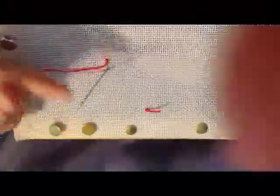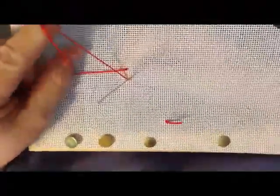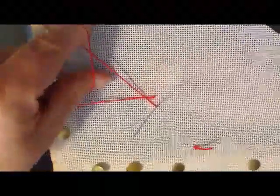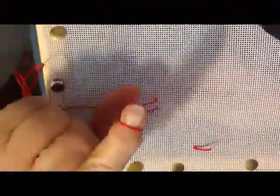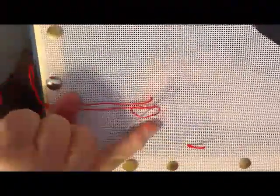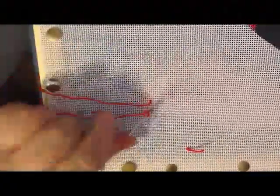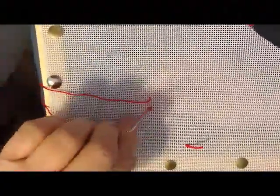Then you want to pick up your thread, you want to twist it around your finger, and you want to twist it so that it's crossed over in the back. Flip your finger and put it on the needle so that it loops around the needle underneath.